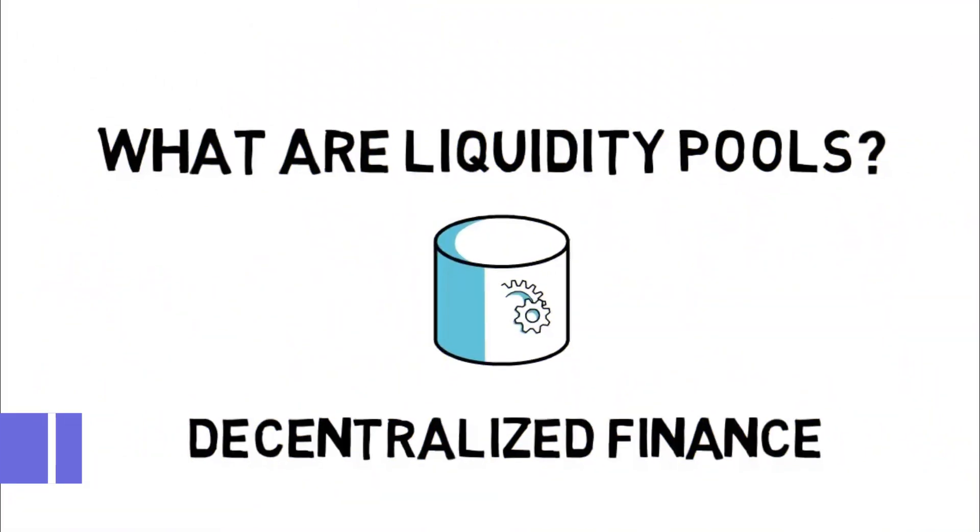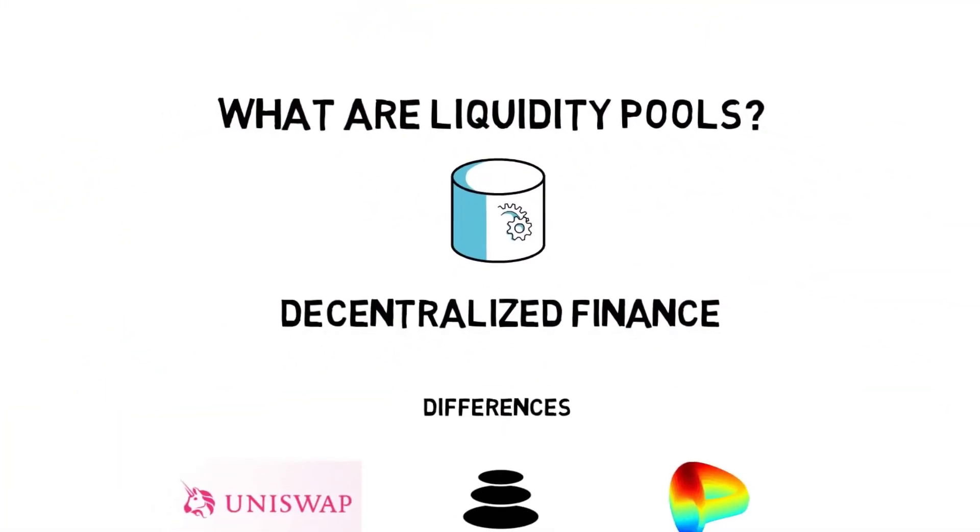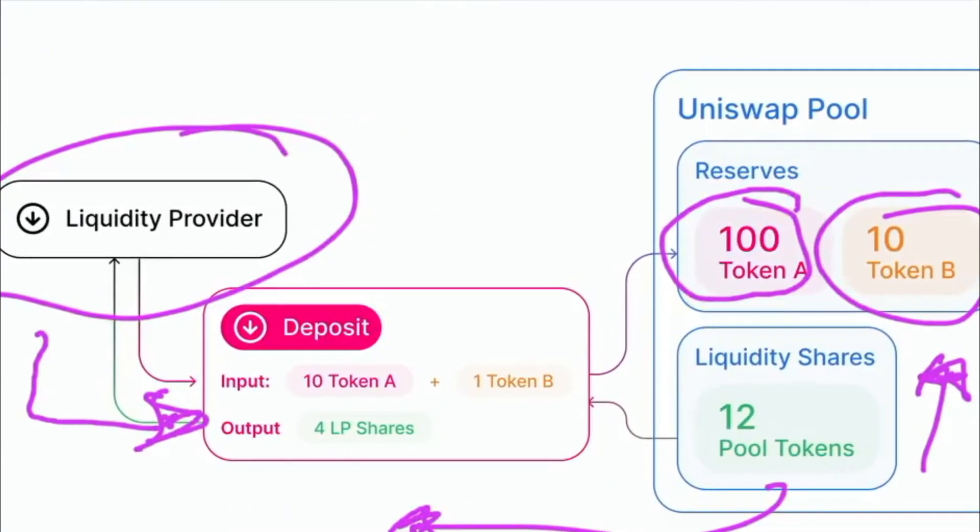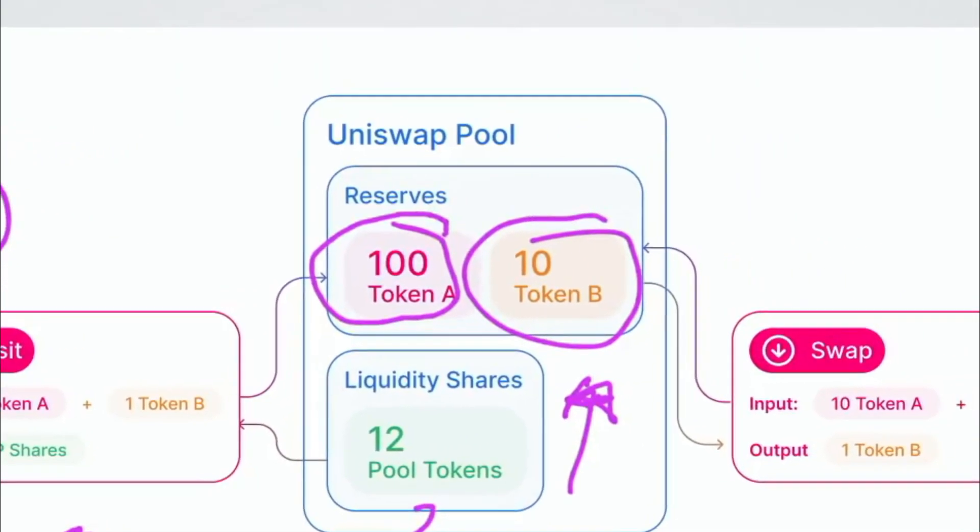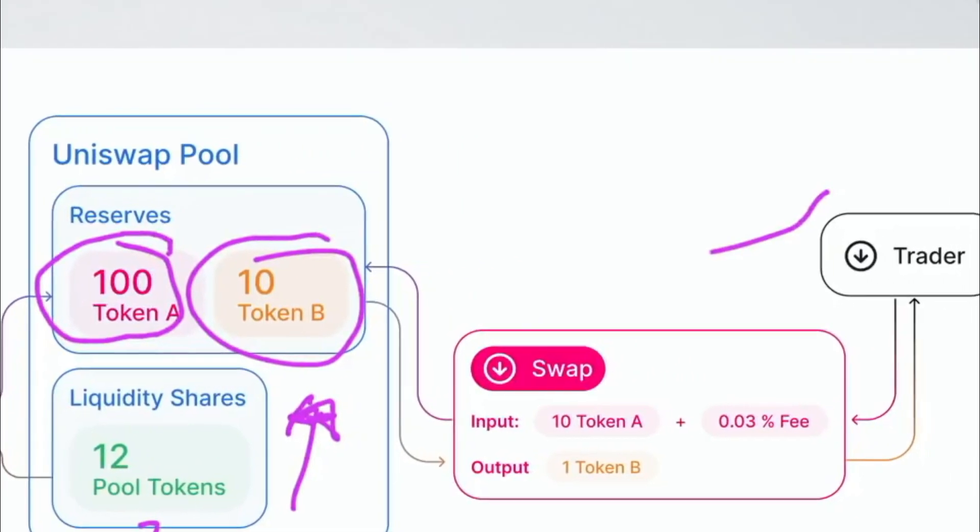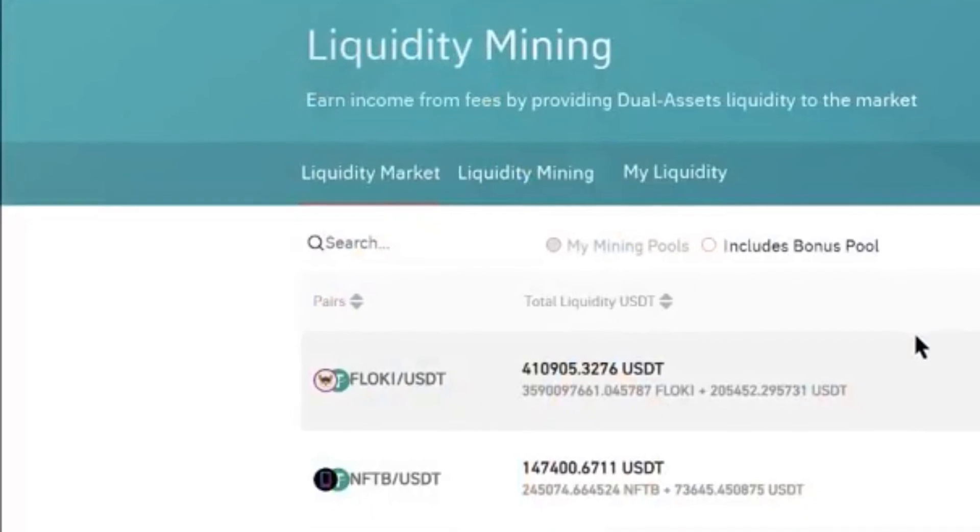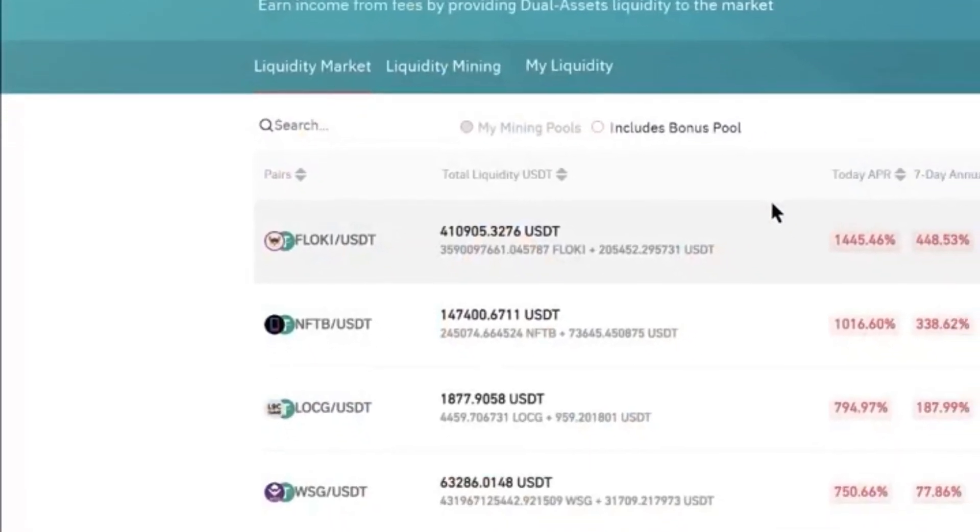What is a liquidity pool? One might think of a liquidity pool as a pool of Bitcoin assets contained within a smart contract. The cash can then be utilized for exchanges, loans, and a variety of other purposes. Decentralized exchanges, which have become the backbone of the DeFi ecosystem, are by far the most popular use case for liquidity pools. Using smart contracts, decentralized exchanges enable users to trade cryptocurrency assets.